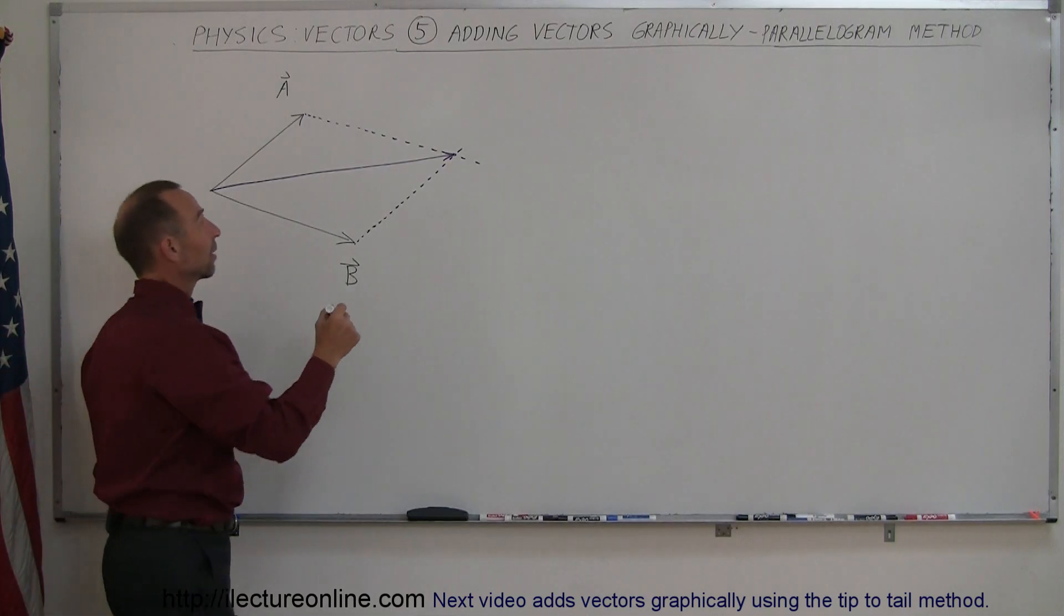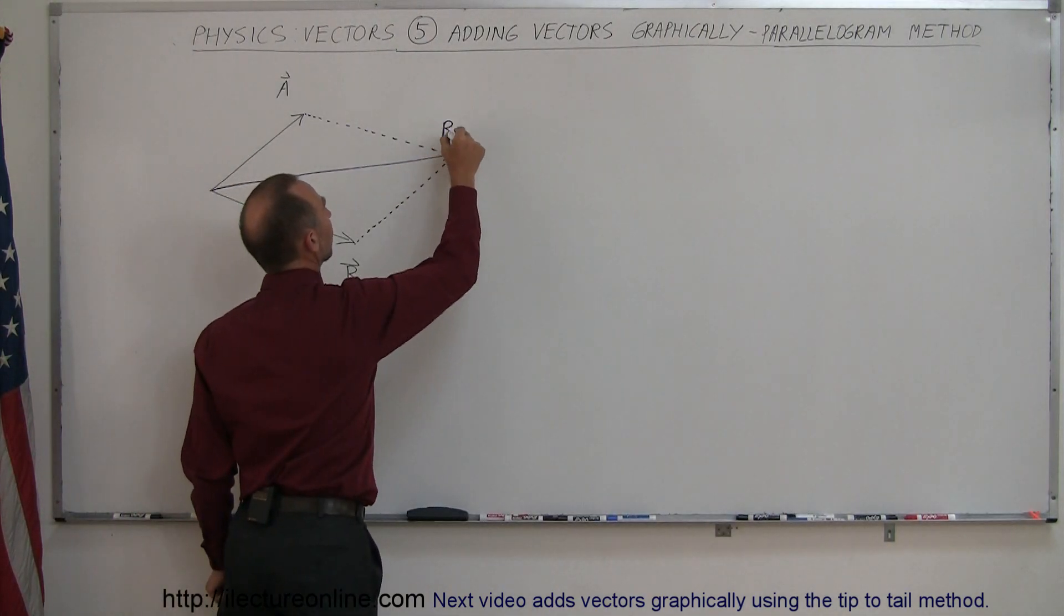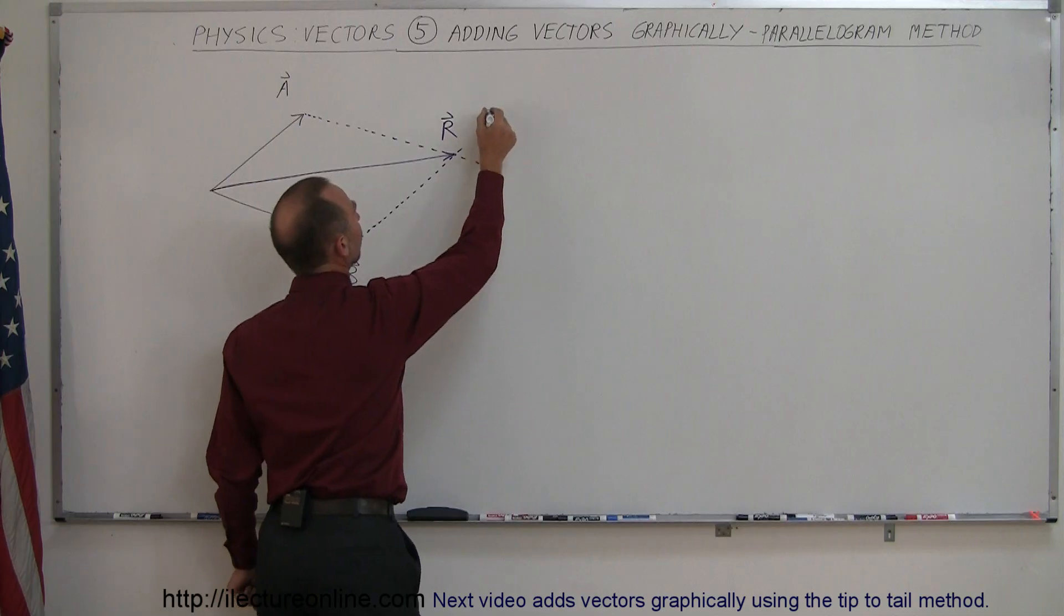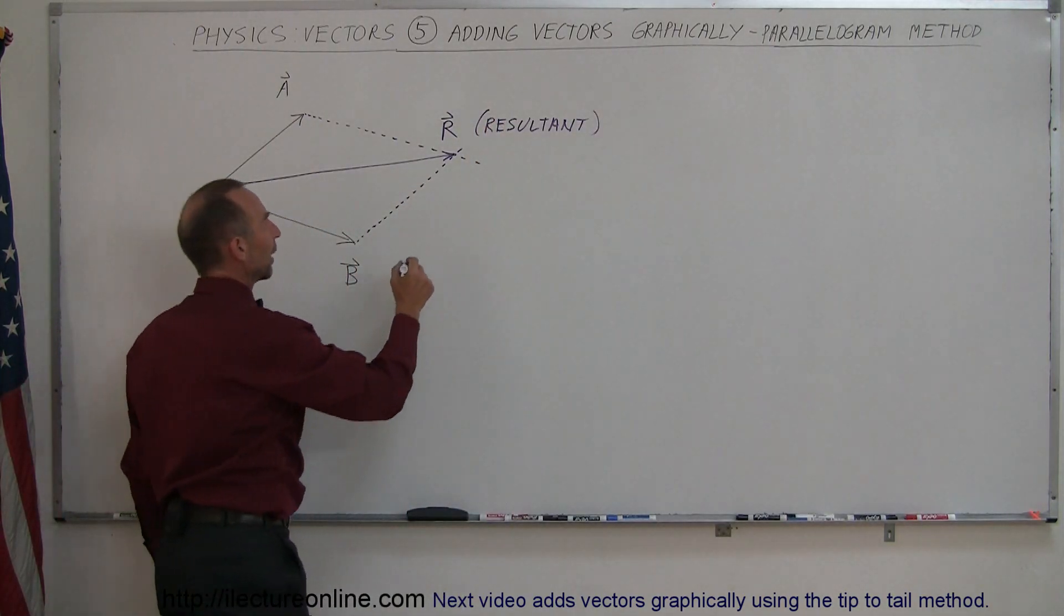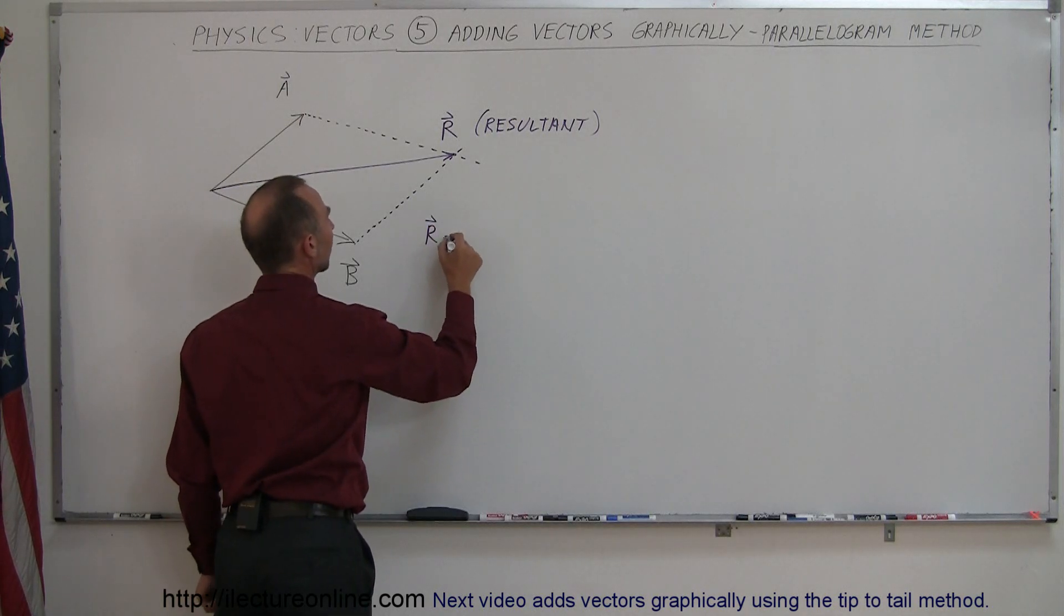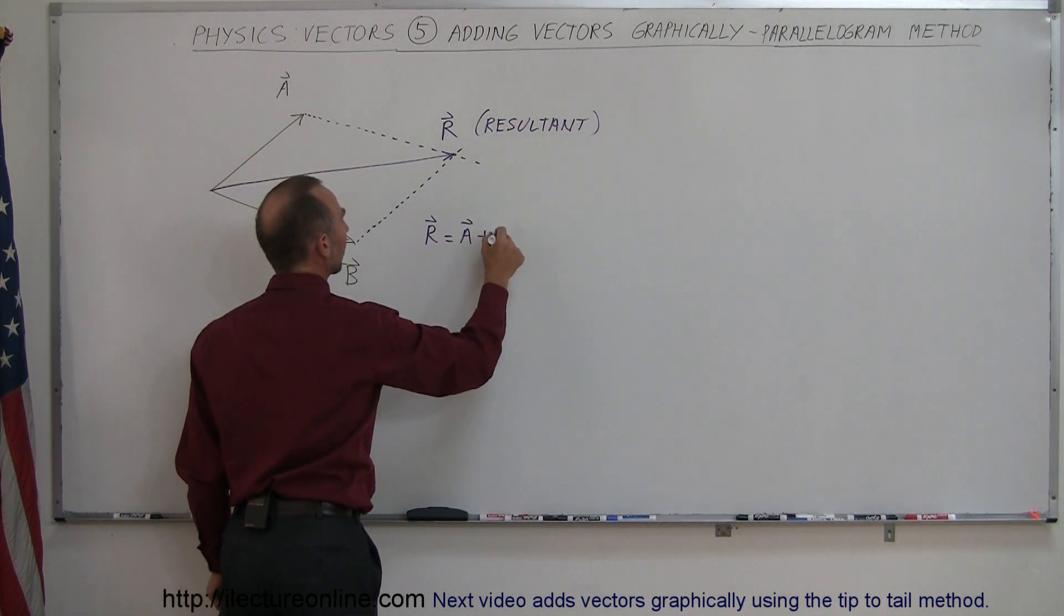So what I can say is, if I call R, the resultant, this is usually called the resultant, that's the resultant vector, the sum of A and B, I can then write that R is simply the sum of A plus B.